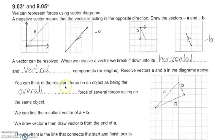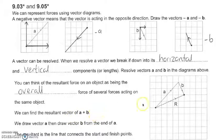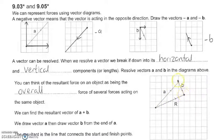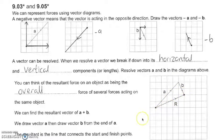The resultant force on an object is the overall force of several forces acting on the same object. To find the resultant vector of A plus B, we add the two vectors together. Importantly, one end of each arrow must connect to the other end of the next vector for the resultant vector to make sense — make sure you apply that rule in your exams.